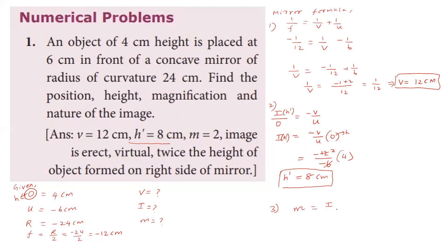The image size is four centimeter. After calculation, the image distance and image height are found. Magnification is greater than one — magnified image, twice the height of the object. Since v is positive, the image is virtual and erect.